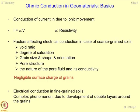What are the basics of ohmic conduction in geomaterials? Conduction of current is due to ionic movement, and the equation normally used is I = σ·V, where σ is the conductivity. Simply: V = I·R, where 1/R = σ. Factors affecting electrical conduction in coarse-grained soils include void ratio, degree of saturation, grain size, shape and orientation, pore structure, the nature of the pore fluid and its conductivity.